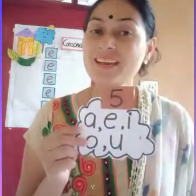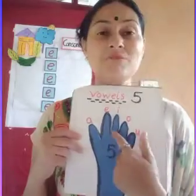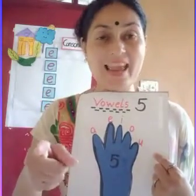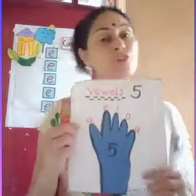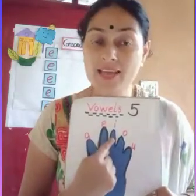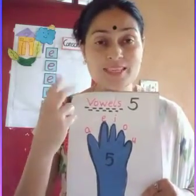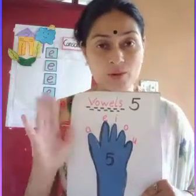Before we start the topic, can anybody tell me how many vowels are there? There are 5 vowels and 21 consonants. We have done A sound words and after that we did I sound words, so it means we have done 2 sounds — A and I.